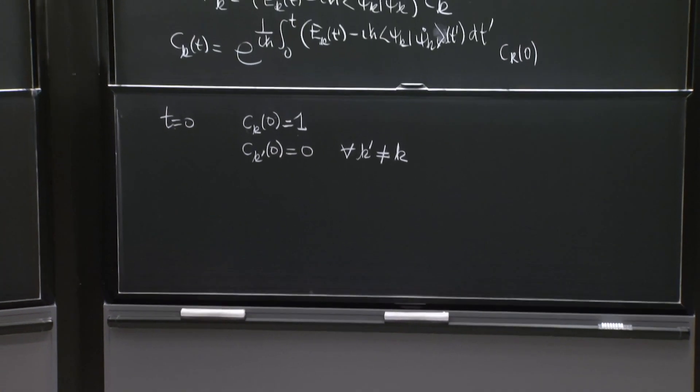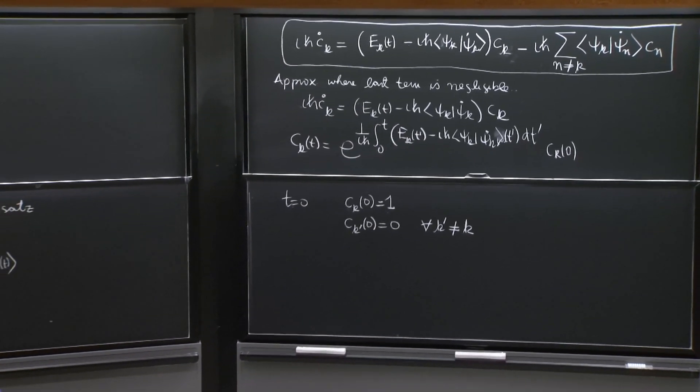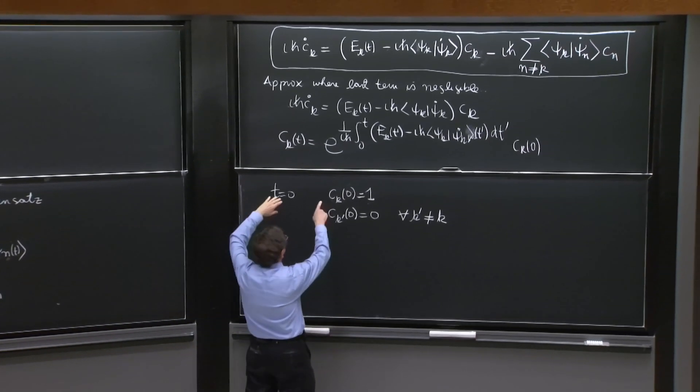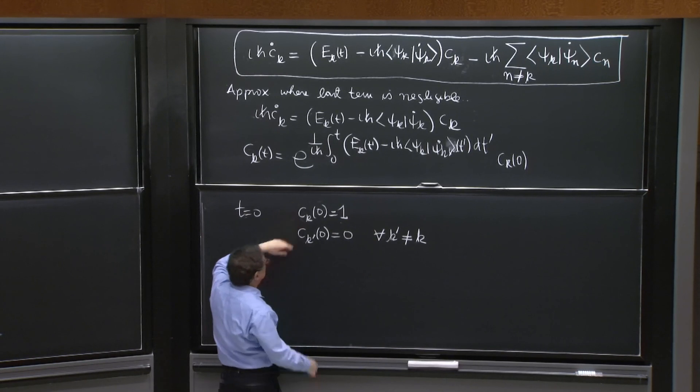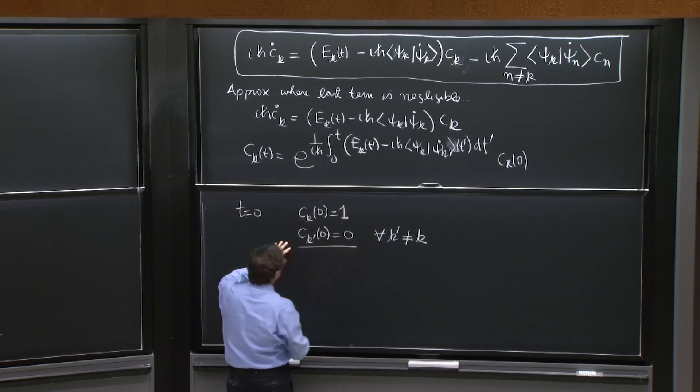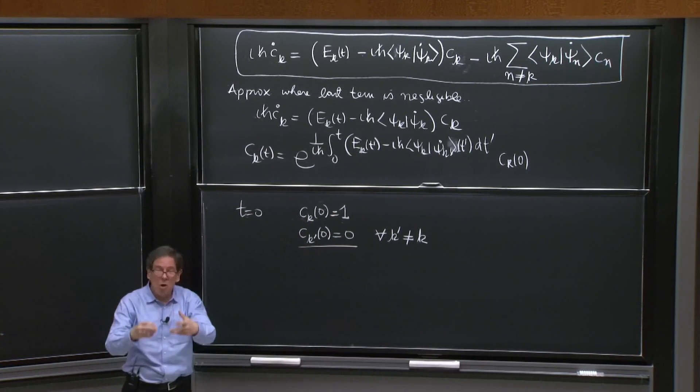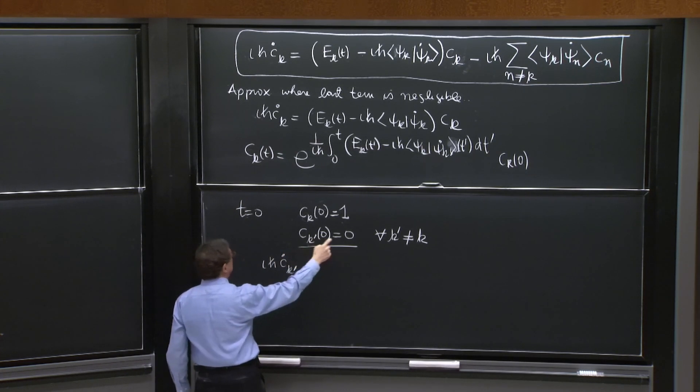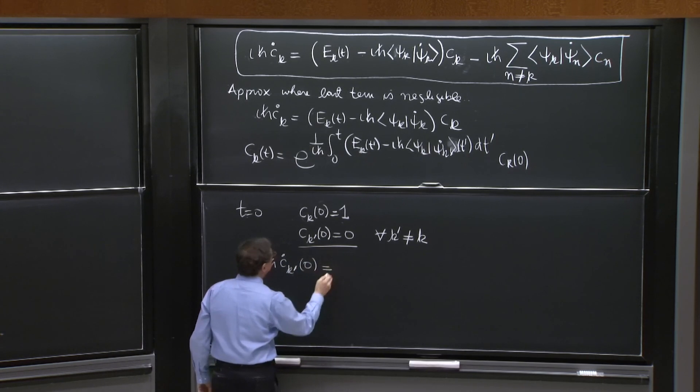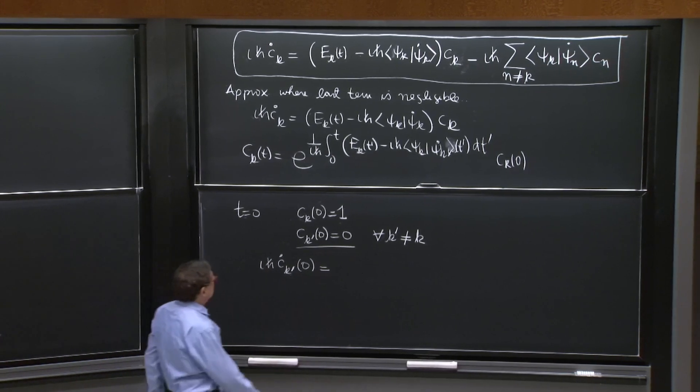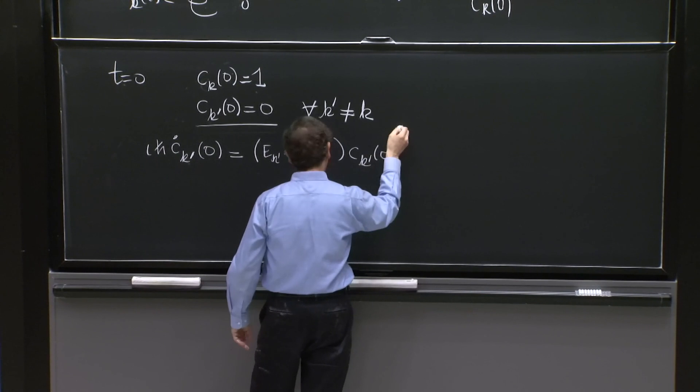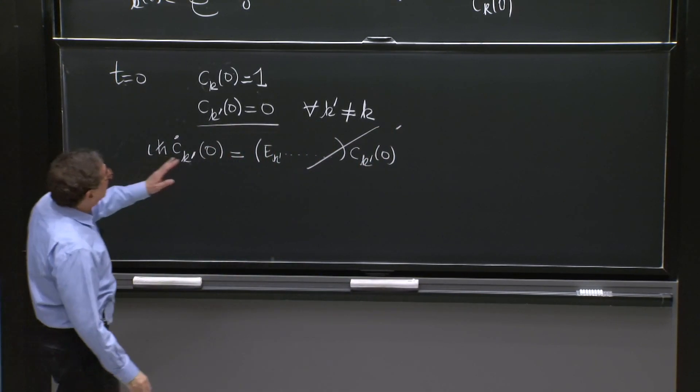If you look at your differential equation and try to see what happens after a little time, well, we know c k dot is going to change. It's going to have a non-trivial value. This is going to happen, but these things are not going to remain 0. Those other states are going to get populated. In particular, i h bar c k prime dot - look at the top equation, apply it for k equal to k prime, and look at time equals 0. What do you get at time equals 0? Well, you would get all this factor, e k prime times c k prime at time equals 0. Well that's 0, that's nothing.